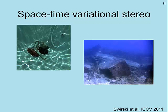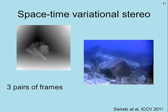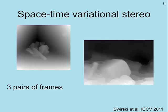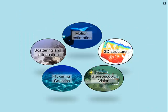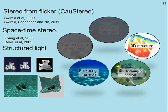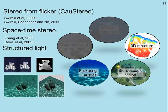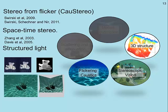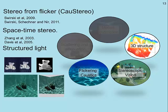This temporal signature enables us to find dense and accurate stereo correspondences under flicker. We can also combine spatial support and smoothness by formulating a minimization problem for multi-frame stereo. These range maps were calculated using three pairs of stereo frames. We previously showed that flicker is useful for finding dense stereo correspondence underwater, which is also related to the space-time stereo framework and to structured light.